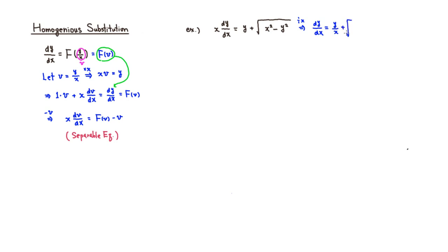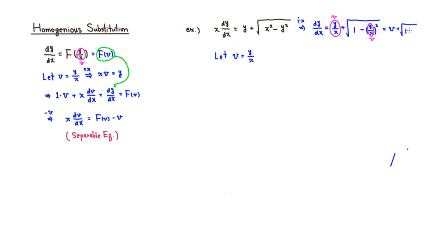Plus, we have a square root, so we need to be careful — we're dividing by x, but inside the square root we divide by x squared. So x squared divided by x squared gives 1, which is nice, and then we have y squared over x squared, which we write as (y/x) squared. So the substitution is v equals y/x.